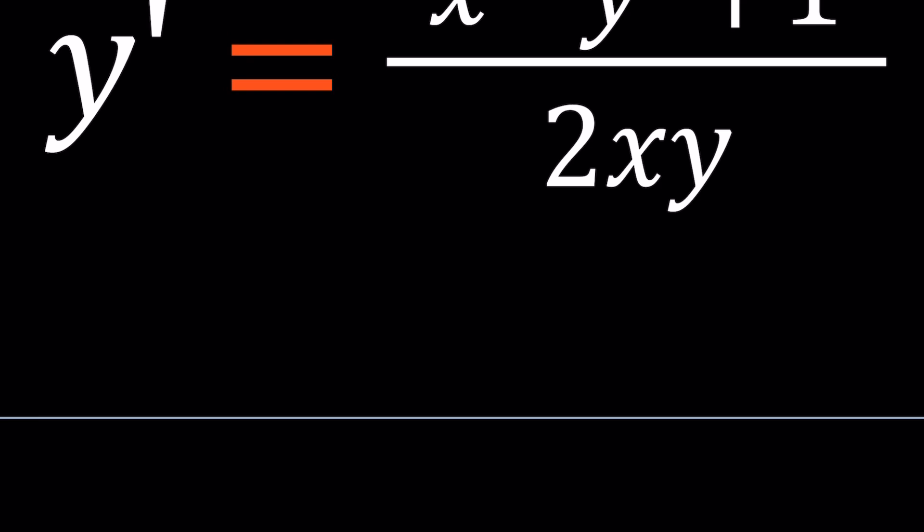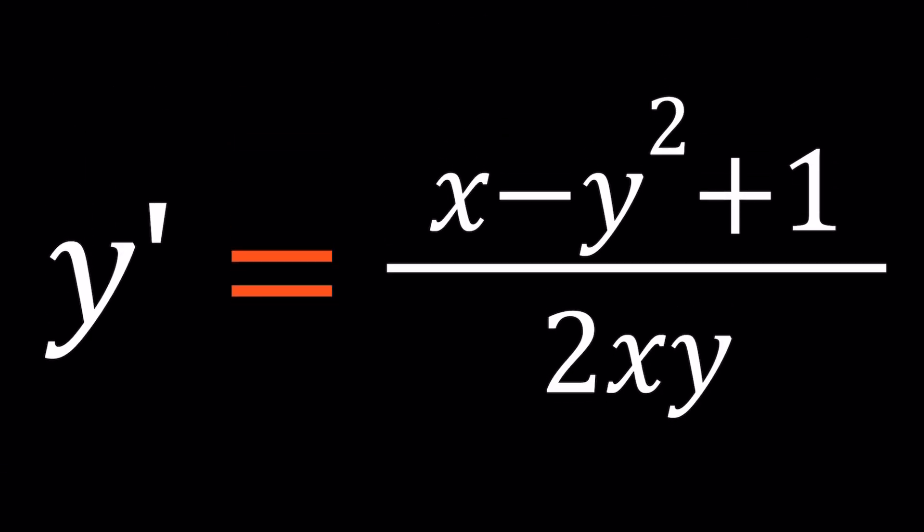If the equation is not separable, you could make it separable using some transformation, or the equation may be exact. If it's not exact, you can use an integrating factor. We're going to try to keep it simple. We're given an expression for y', and this is not separable—x and y are mixed together.